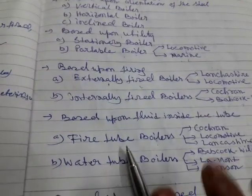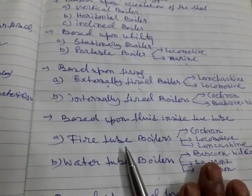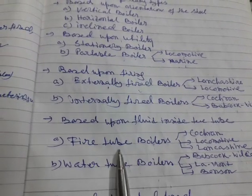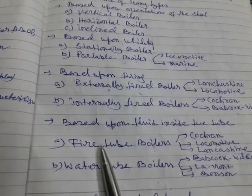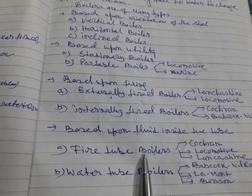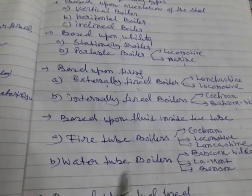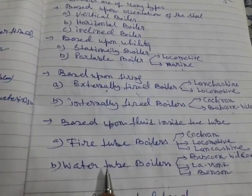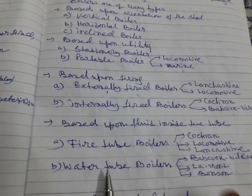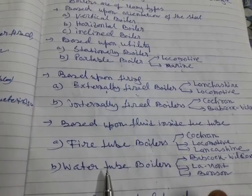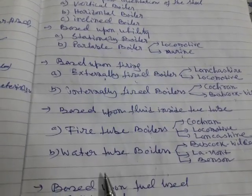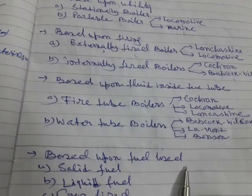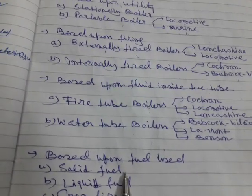In a fire tube boiler, flue gas passes through the tube and is surrounded by water. In a water tube boiler, water is inside the tube and is surrounded by fire. Based upon the fuel used: solid fuel like coal, liquid fuel such as petrol, diesel, or kerosene, and gaseous fuels like CNG and LPG.